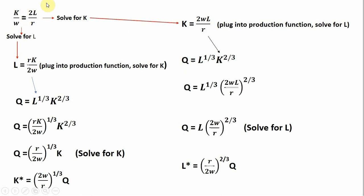We're going to take this condition that we solved for and now solve for L, and then also solve for K. Let's solve this top equation for L. Dividing through by two and multiplying through by R, you'll get something like this. Next, let's plug this into the production function — where we see an L, we're going to plug in R times K divided by two times W. And don't forget, that's going to be raised to the one-third. After substitution, we have something like this. I can pull out K to the one-third multiplied by K to the two-thirds — that's why we just have K. So K to the one-third times K to the two-thirds power is just K.